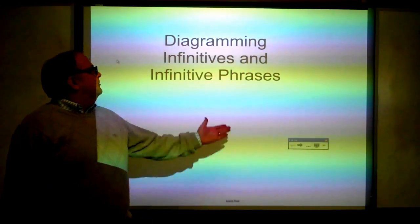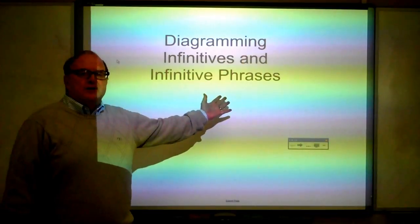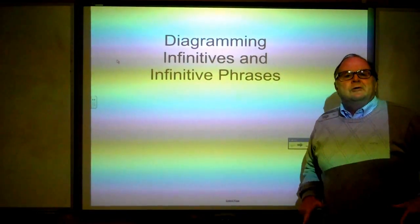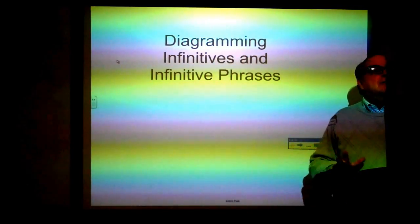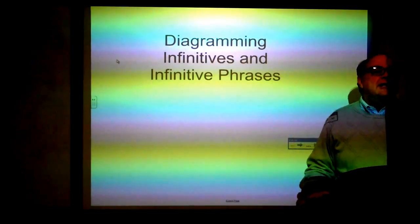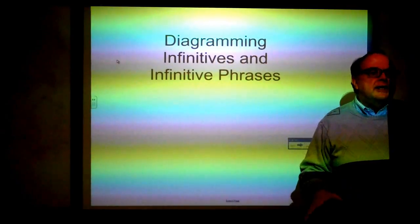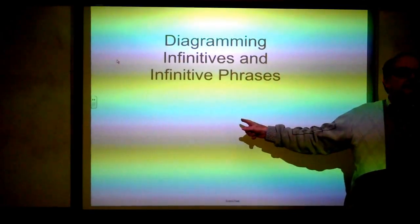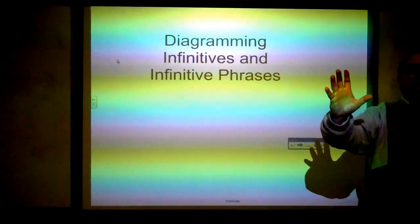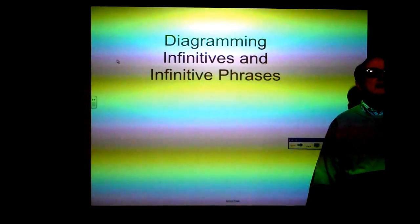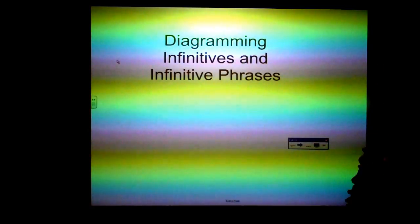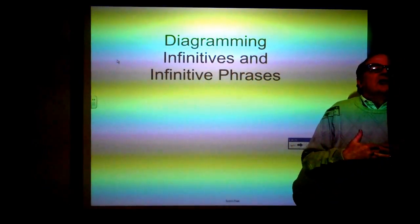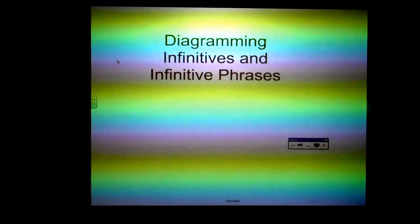Hello. Welcome to Diagramming Infinitives and Infinitive Phrases. Before I begin, a couple of you have asked about why this looks so dark. It's not done in a dark room. It's a well-lit room with plenty of sunlight and ceiling lighting. But the smart board projects light directly toward the camera so the camera adjusts by making everything around it dark. You have kind of the same effect if you were to try to take a picture of the sun. But you don't have to see me as long as you can see the board — that's what's important.